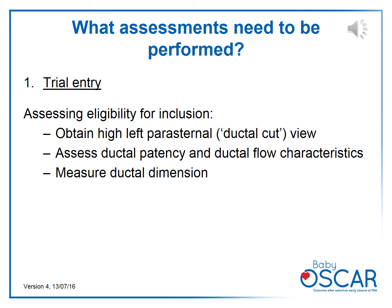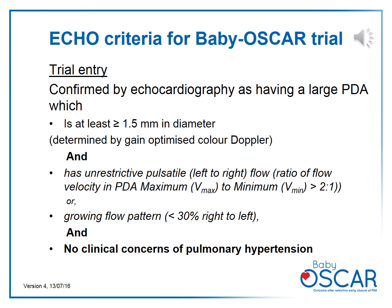The scan involves obtaining a high left parasternal — that is, a ductal cut view — and assessing the ductal patency and ductal flow characteristics. The echocardiographic criteria for inclusion in the Baby Oscar trial are a duct diameter of 1.5 millimeters or more, determined by gain-optimized color Doppler, and a flow pattern that is either pulsatile left-to-right flow where the maximum-to-minimum velocity ratio is more than two, or a growing flow pattern where right-to-left flow is less than 30 percent. The clinician performing the scan should establish that there are no clinical concerns of pulmonary hypertension.